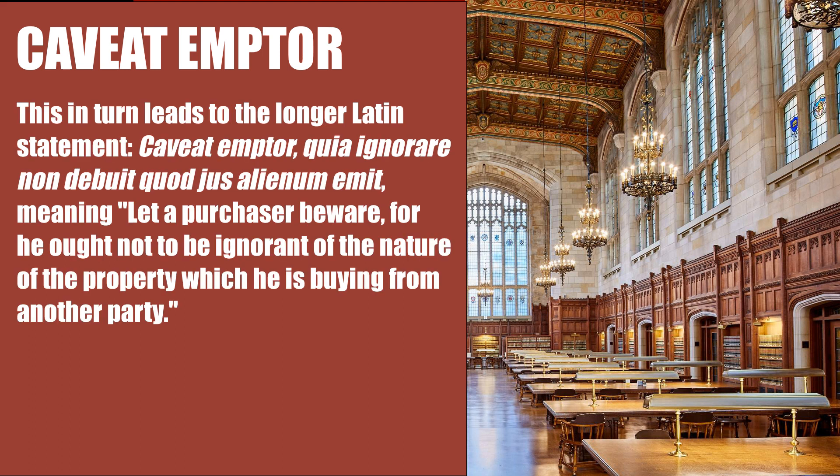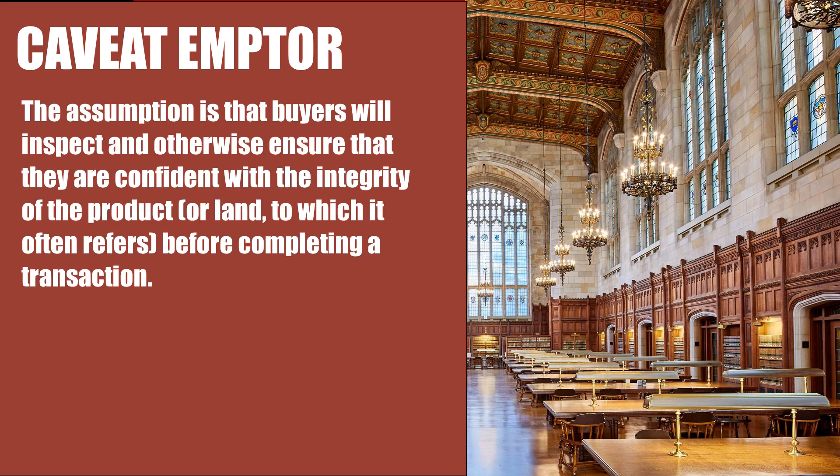This in turn leads to the longer Latin statement, caveat emptor quia ignorare non debuit quod jus alienum emit, meaning: 'let a purchaser beware, for he ought not to be ignorant of the nature of the property which he is buying from another party.' The assumption is that buyers will inspect and otherwise ensure that they are confident with the integrity of the product or land, to which it often refers, before completing a transaction.